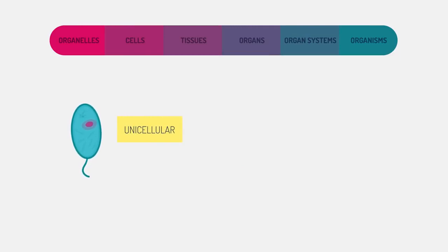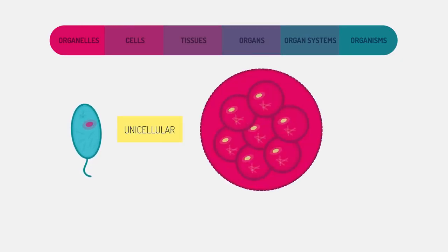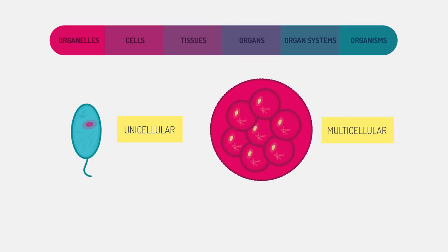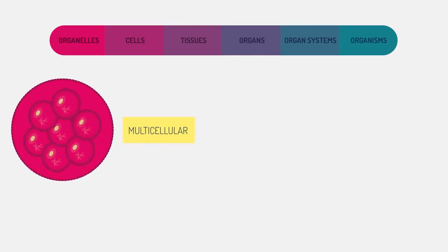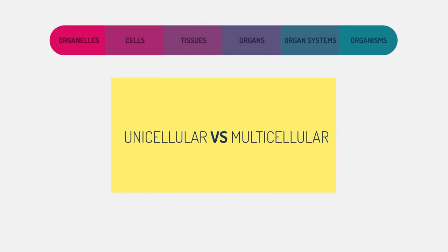To learn more about the differences between unicellular and multicellular organisms, watch this video. All living things are made up of cells. This is what distinguishes them as living. Cells are the building blocks of life.